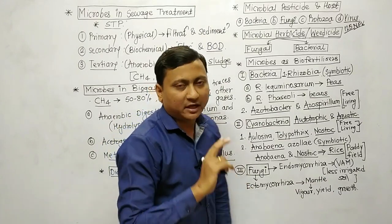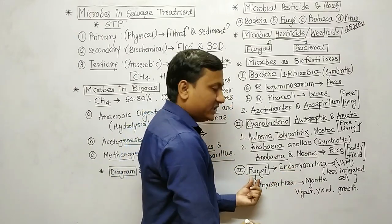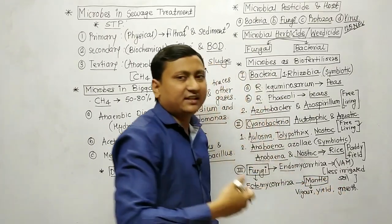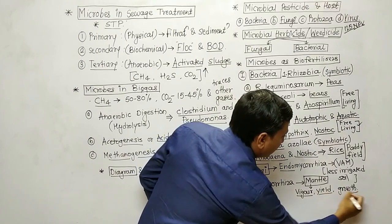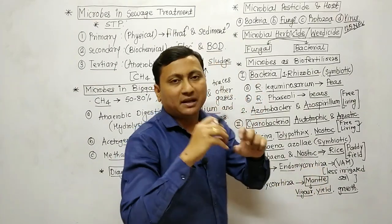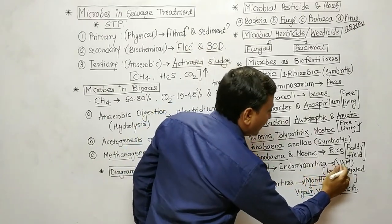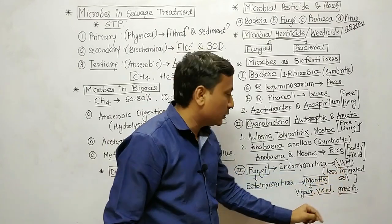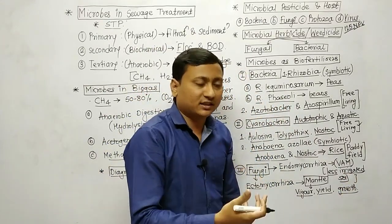The third category is fungal biofertilizers, which has two types: ectomycorrhiza and endomycorrhiza. Ecto means outside, endo means inside. Ectomycorrhiza forms a mantle structure that increases the surface area, allowing more water and nutrients to be absorbed, which results in increased vigor, yield, and plant growth. Endomycorrhiza penetrates the cortical cells of plant roots and forms vesicular arbuscular structures — this is called VAM, vesicular arbuscular mycorrhiza. VAM plants can grow well even in less-irrigated soil.